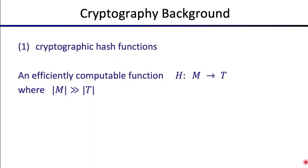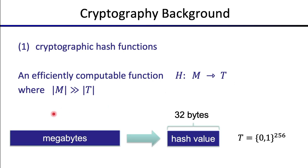The first cryptographic primitive is what's called the cryptographic hash function. A hash function is an efficiently computable function that maps a large domain into a small range. The domain M is much, much larger than the range T. You might be hashing megabytes of data provided as input, but no matter how much data is provided, the hash function always only outputs 32 bytes. Large amounts of data come in, a fixed short 32-byte digest comes out.